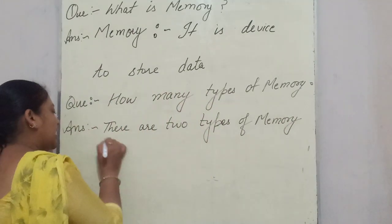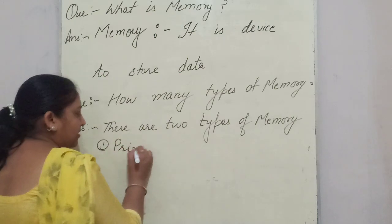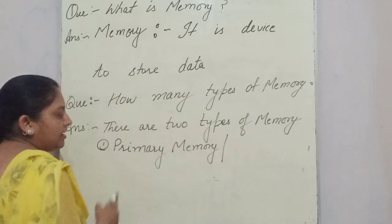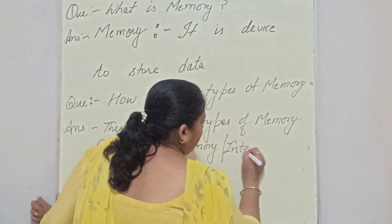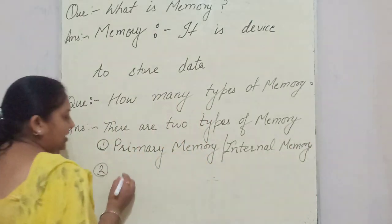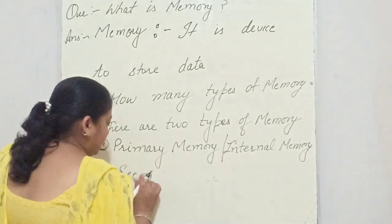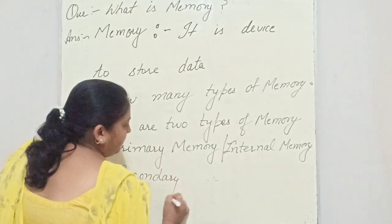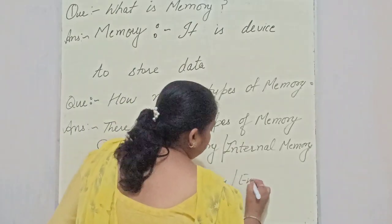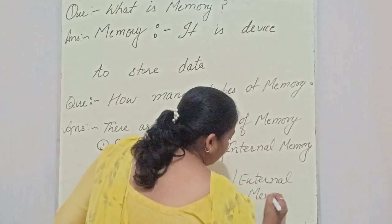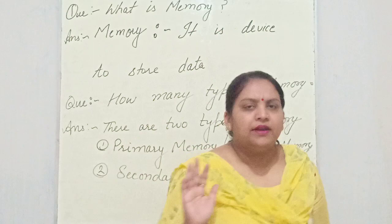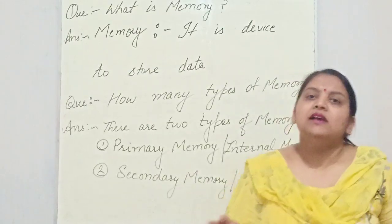Number one, you will write: primary memory, also called internal memory. And the second part, you will write: secondary memory, also called external memory. So memory is a device to store data, and it is of two types — primary memory and secondary memory.